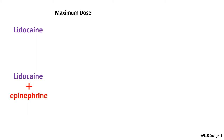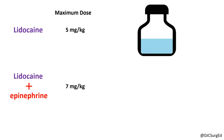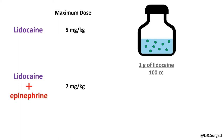Lidocaine has a maximum dose of 5 mg per kg without epinephrine and 7 mg per kg with epinephrine. Lidocaine comes in different concentrations, with each percentage equal to 1 g of lidocaine per 100 cc.